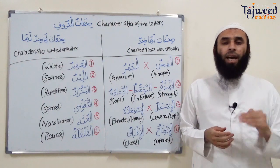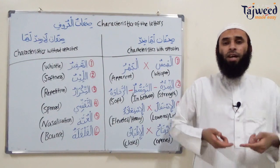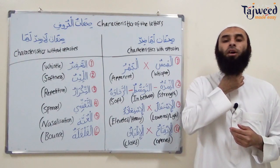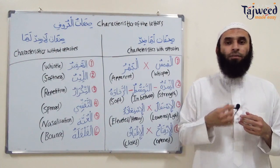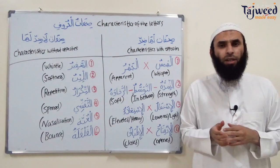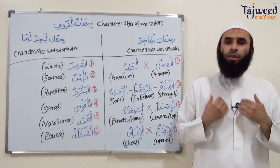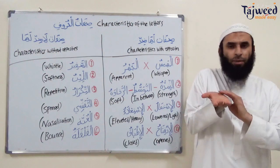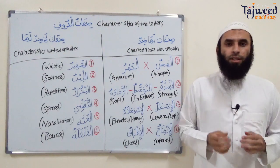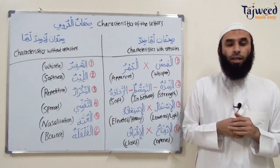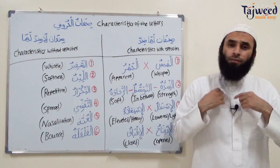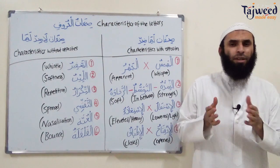For example, I've actually pronounced the Kha from its correct Makharij, which is the top of the throat. But I've not pronounced it properly. The Arabs used to pronounce Kha with heaviness by elevating the back of the tongue — Kha, Khalideena — instead of Kha Khalideena. Similarly, Ar-Rahman, Ar-Rahim: I've taken out the Ra from its correct Makharij, but I did not pronounce it properly.